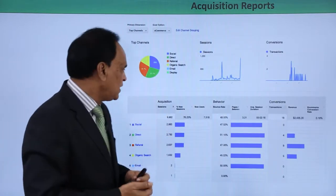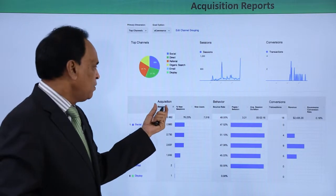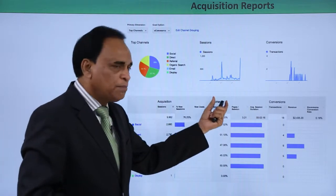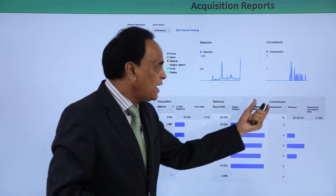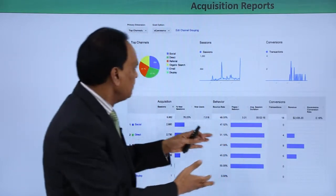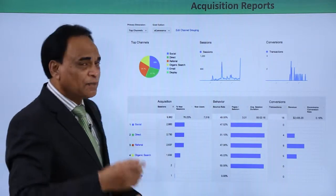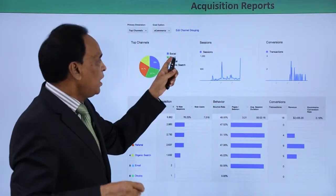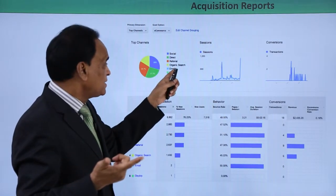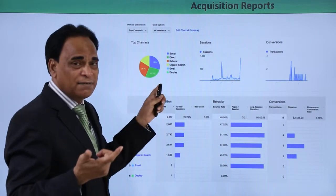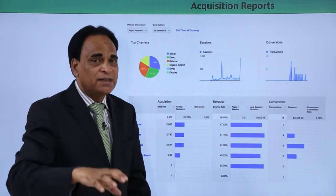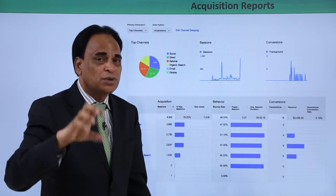Now we have the acquisition report. Here there are three key elements: acquisition, behavior, and conversion — the source of the traffic, how people are walking through the various pages of the website, and whether conversion has happened or not. What you have here are the top channels — the source of traffic — showing how many people came from social media, how many came directly, referral, organic search, email, and display advertising. These are the various sources shown in the map as the top channels of acquisition.